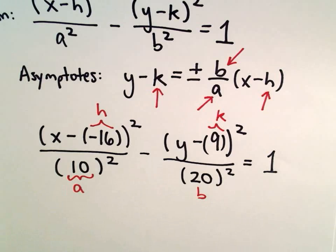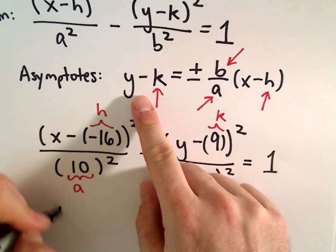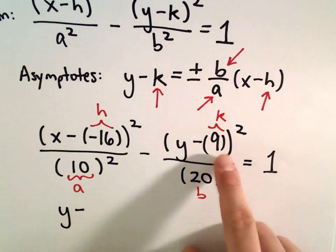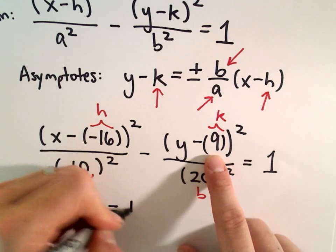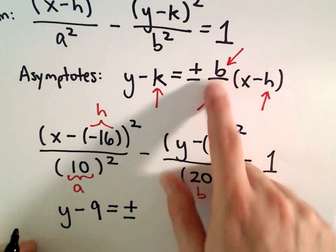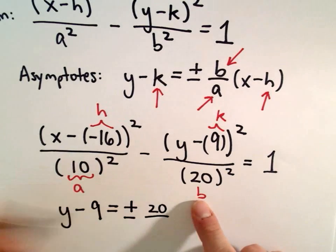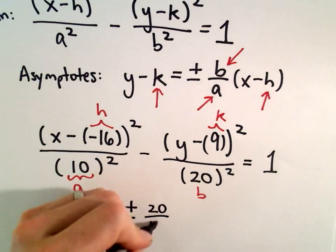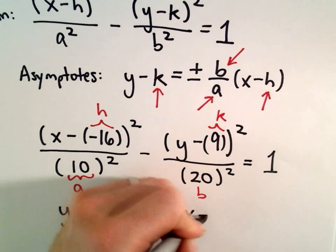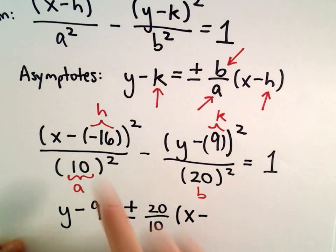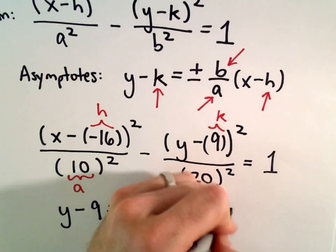So our asymptotes will be y minus k, which is 9, equals positive or negative b over a. We said b had value 20, a was equal to 10. Then we do x minus the h value, so the h value is negative 16.